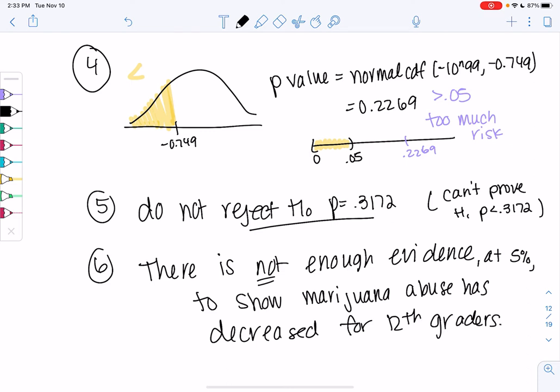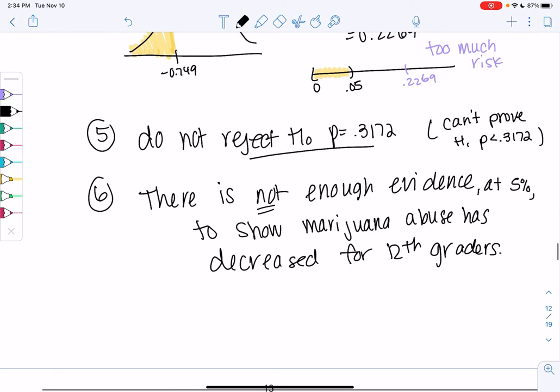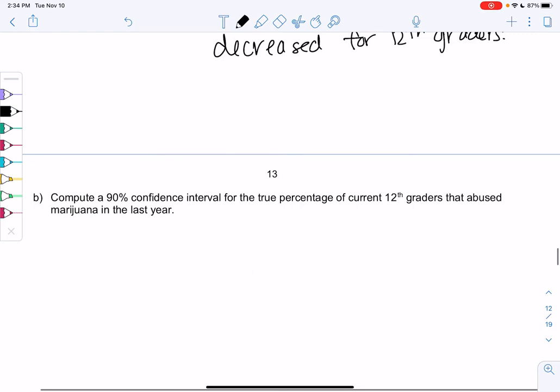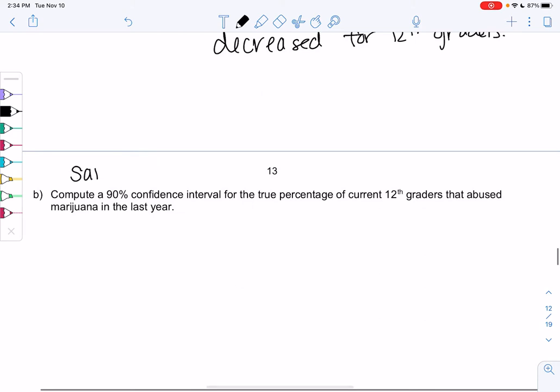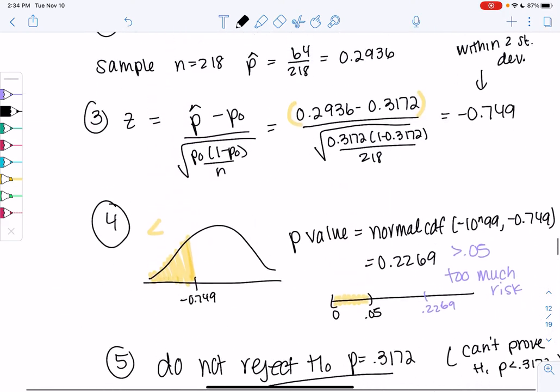So we just have a few follow-up questions regarding the same sample, and then we'll look at means in the next section. We're going to compute a 90% confidence interval for the same data. So I'm just going to copy the sample data down. N was 218 and P hat was 0.2936. That's from my sample.